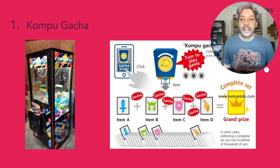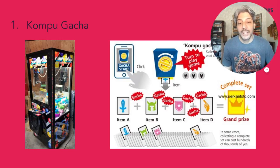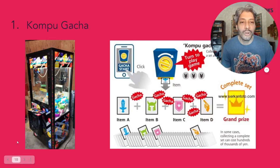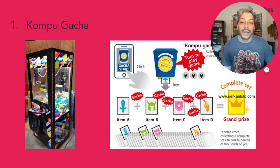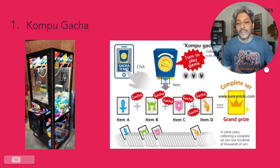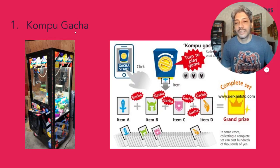Gacha and Compu-Gacha are probably the most controversial of all game mechanics. You've seen this kind of machine in malls — you use a small crane to pick a toy or chocolates, and there's a probability attached. Sometimes you can't pick anything, you might get a toy you already have, or you come out empty-handed. That's the gacha mechanic — a Japanese-derived term meaning 'gotcha, I got it.' Compu-Gacha means 'complete gacha': imagine five different toy types in the machine and you'd win a grand prize for collecting one of each type.